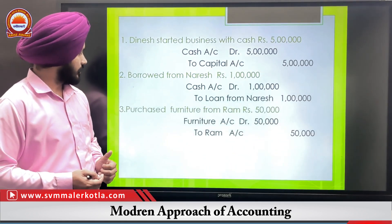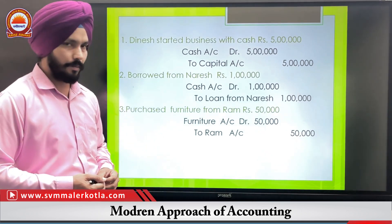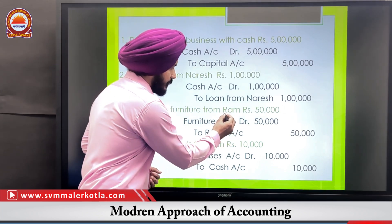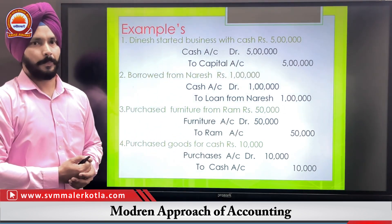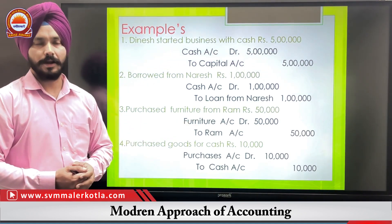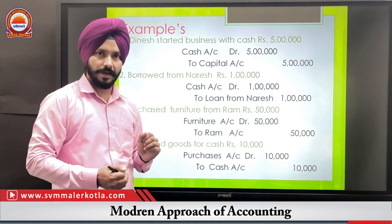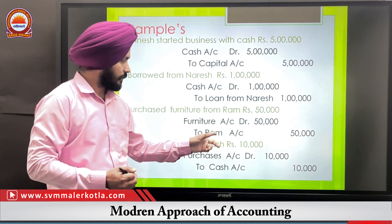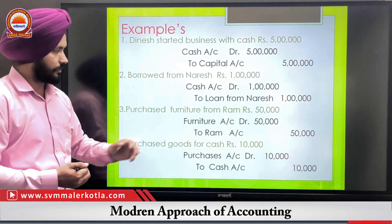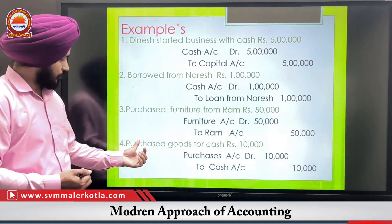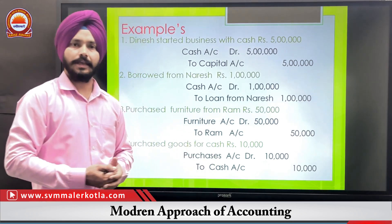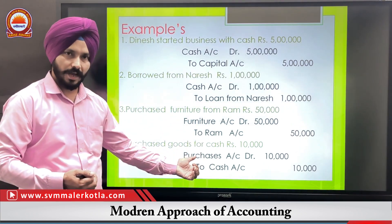Third example: Purchased furniture from Ram. Since Ram's name is mentioned, this means it is a credit purchase. Our entry is: Furniture Account Debit to Ram — increasing assets is debited and we credit the giver.